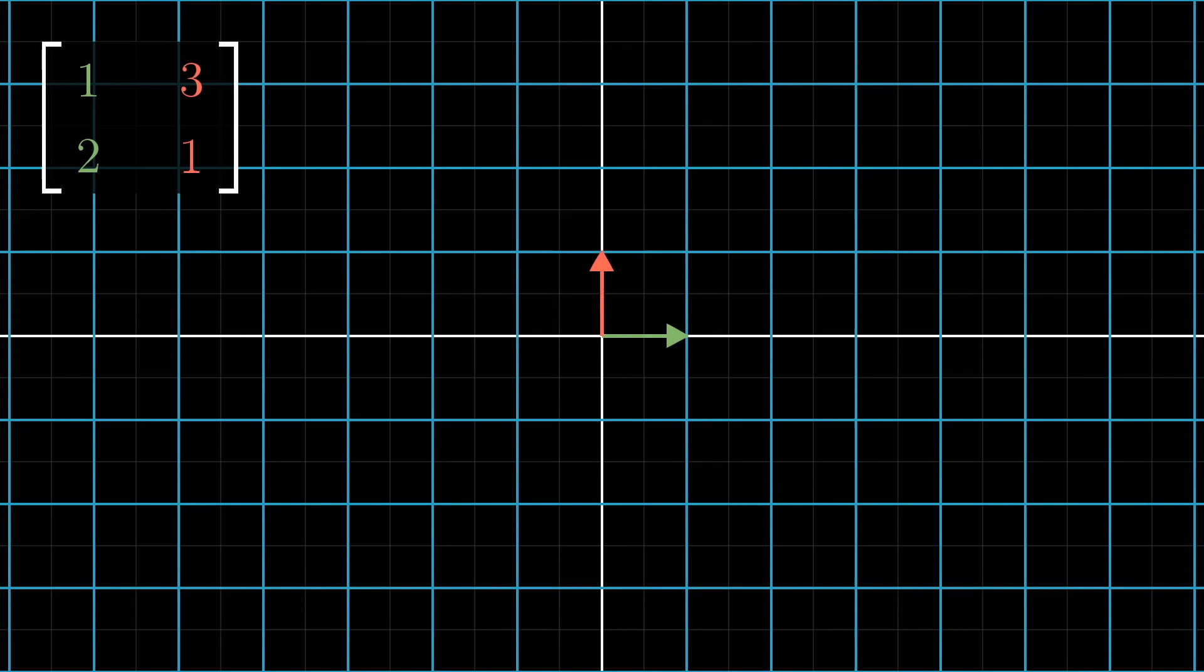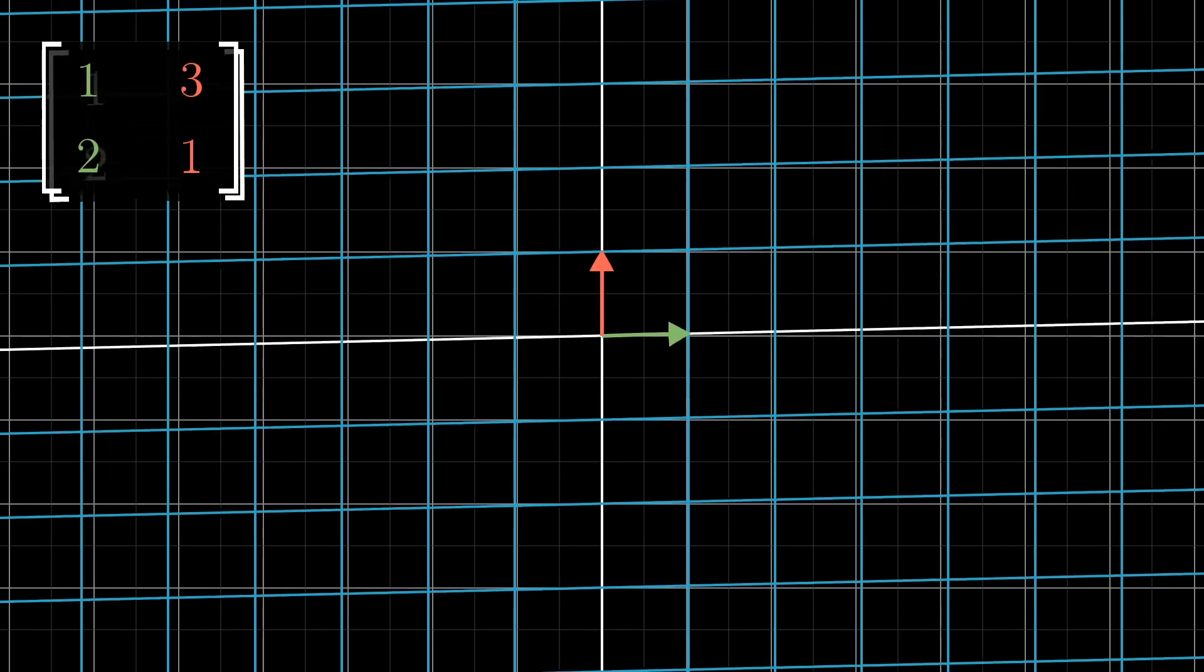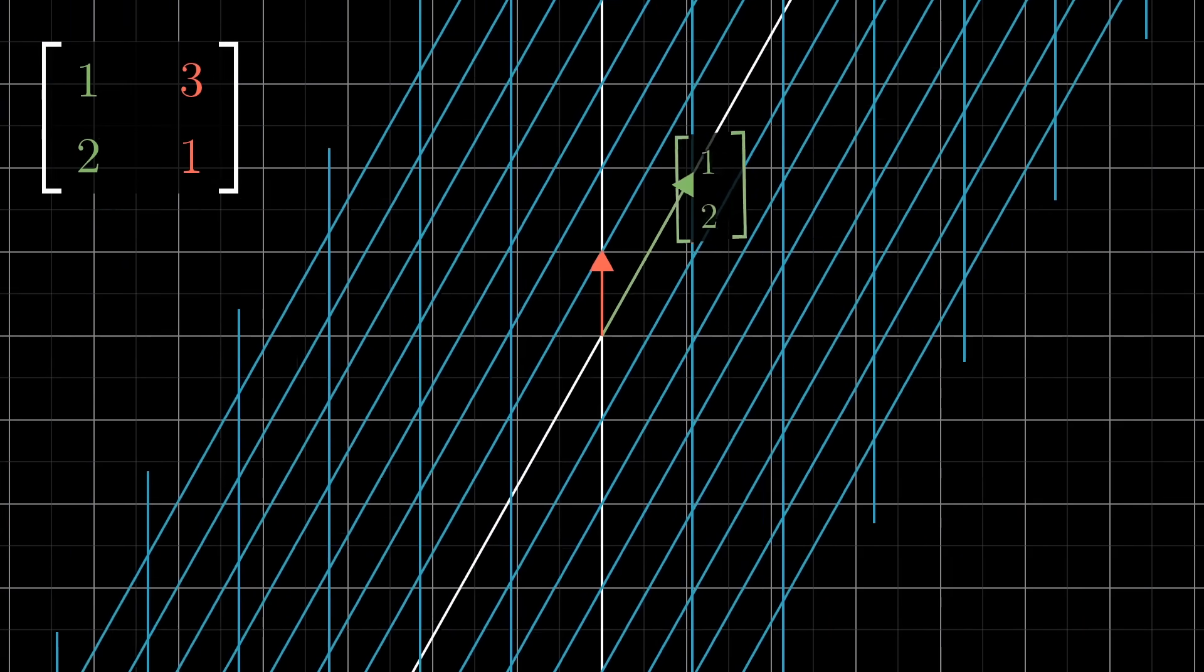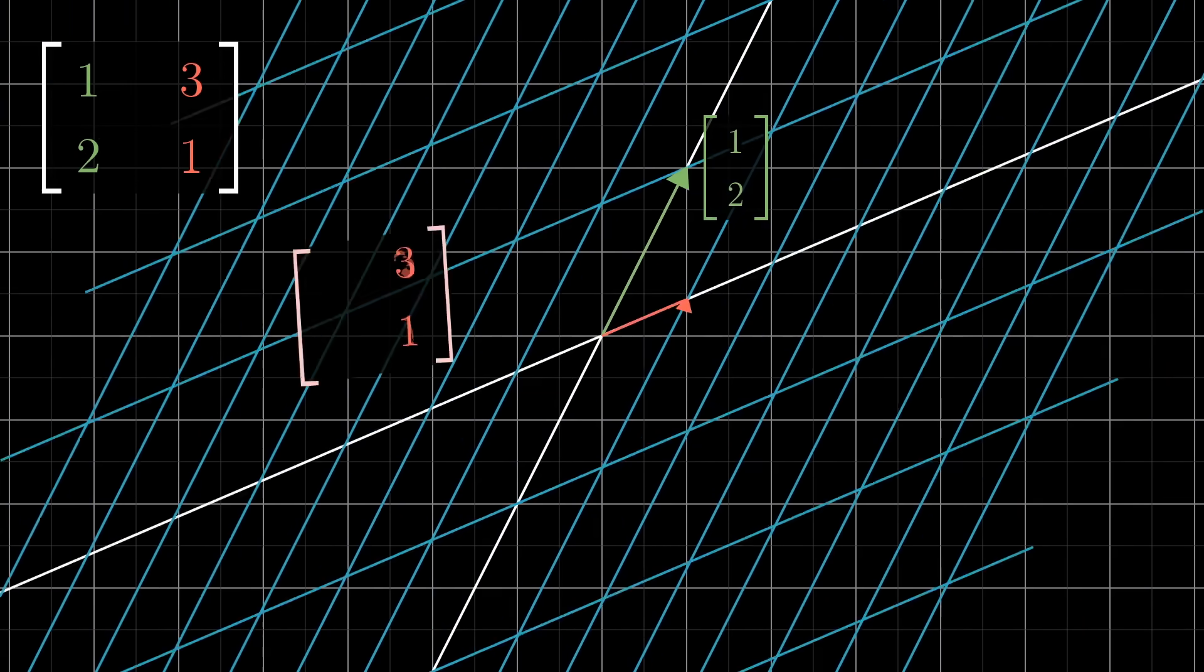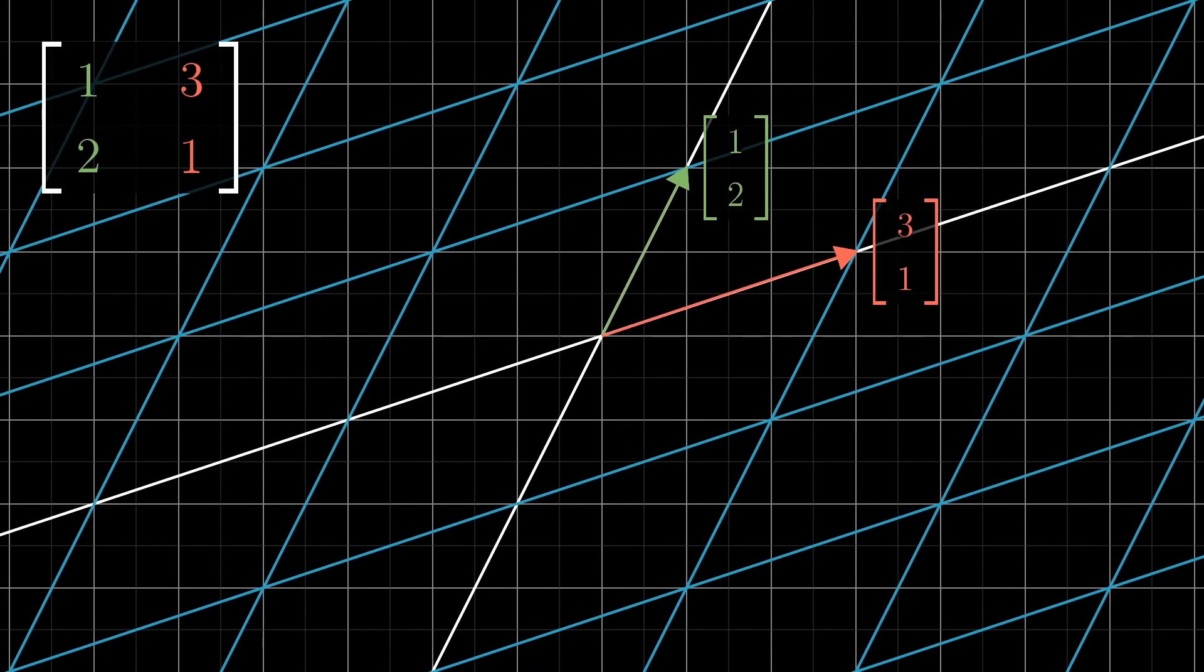Let's say we want to go the other way around, starting with a matrix, say with columns (1, 2) and (3, 1), and we want to deduce what its transformation looks like. Pause and take a moment to see if you can imagine it. One way to do this is to first move i-hat to (1, 2), then move j-hat to (3, 1), always moving the rest of space in such a way that keeps gridlines parallel and evenly spaced.